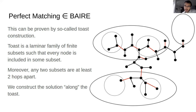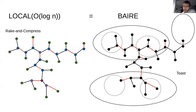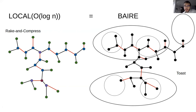So this is how we prove perfect matching is in the Baire class. The two reasons why perfect matching is in local O(log n) and why it is in the Baire class share some similarities — both are hierarchical constructions — but they are also different. The Baire construction is a countable construction on an infinite tree, while the distributed construction is a finite construction finishing after O(log n) steps. Yet both capture exactly the same class of problems, and I think this is quite an interesting fact.